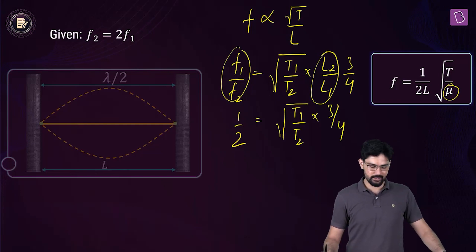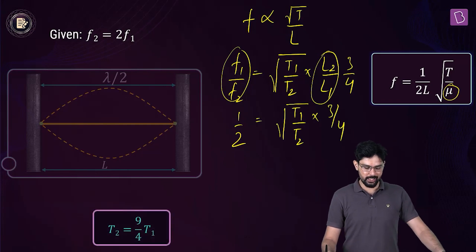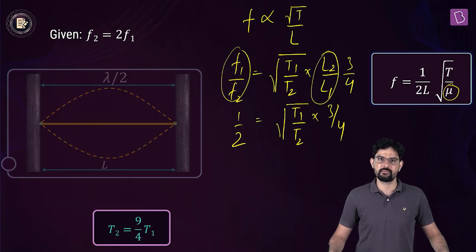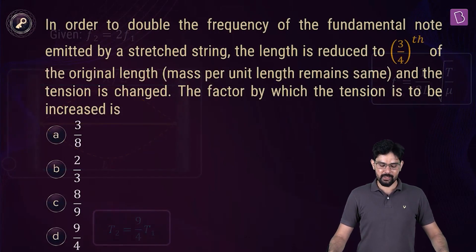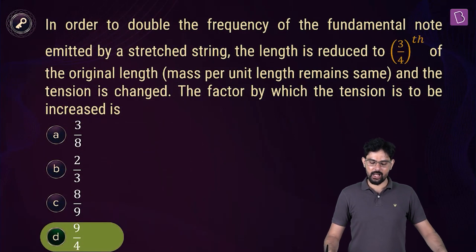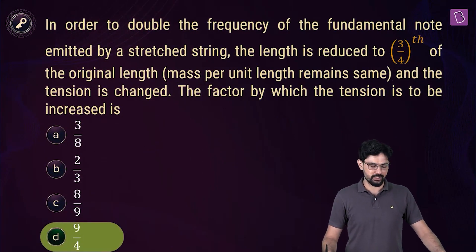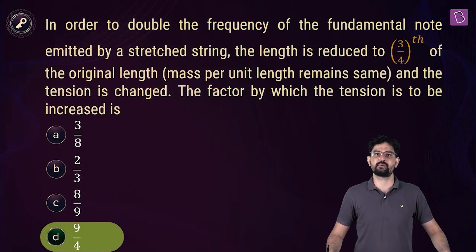This gives us T2 = (9/4)T1. So the new tension should be 9/4 times the old tension to achieve this, and option D is the right answer.